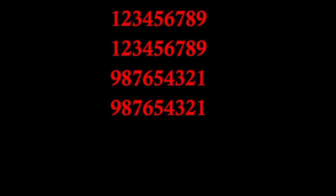Altogether we can see four numbers on the screen. The first one is 123456789, the third one is the reverse of the first one: 987654321, and the second number is 123456789, which is the same as the first number.